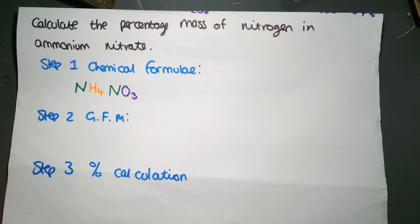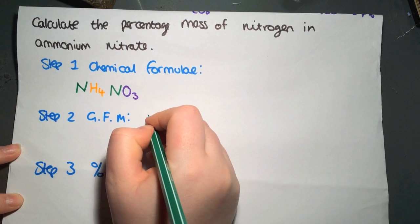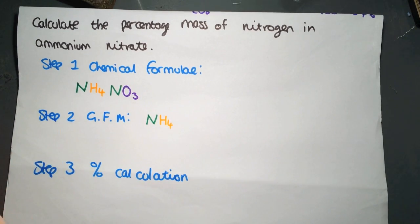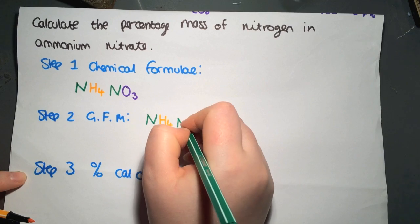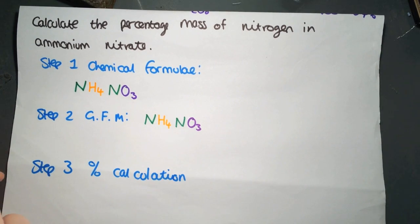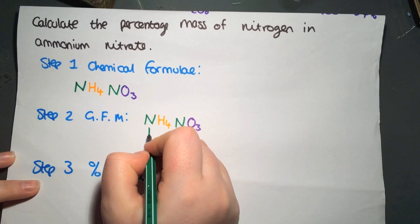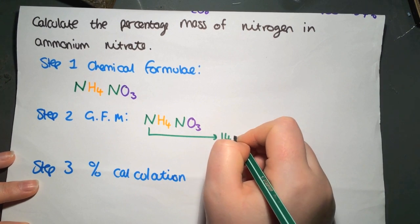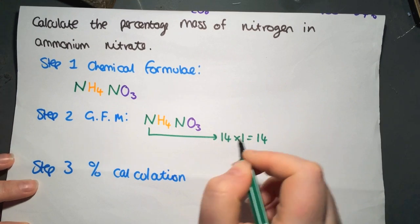We're going to use this to calculate our gram formula mass. So we have nitrogen, hydrogen, some more nitrogen, and oxygen. So we have nitrogen with a relative atomic mass of 14 multiplied by 1, that's 14.